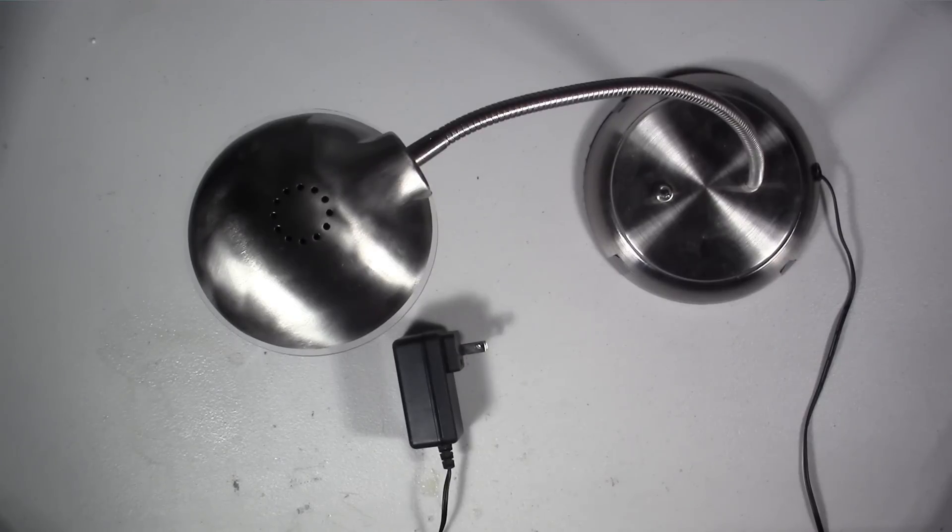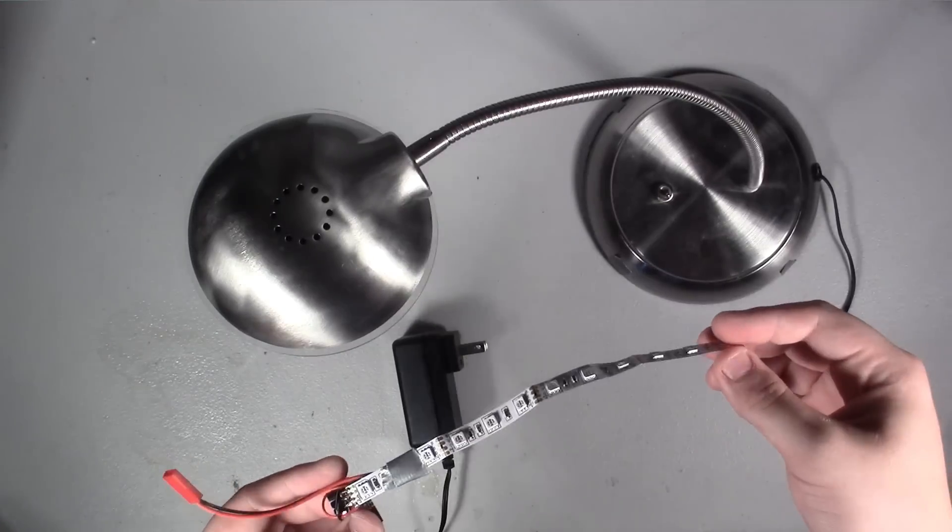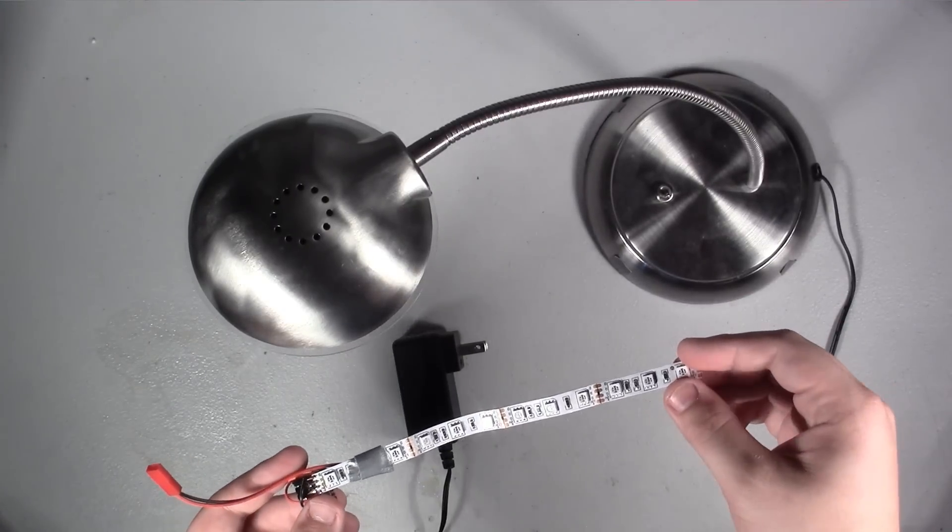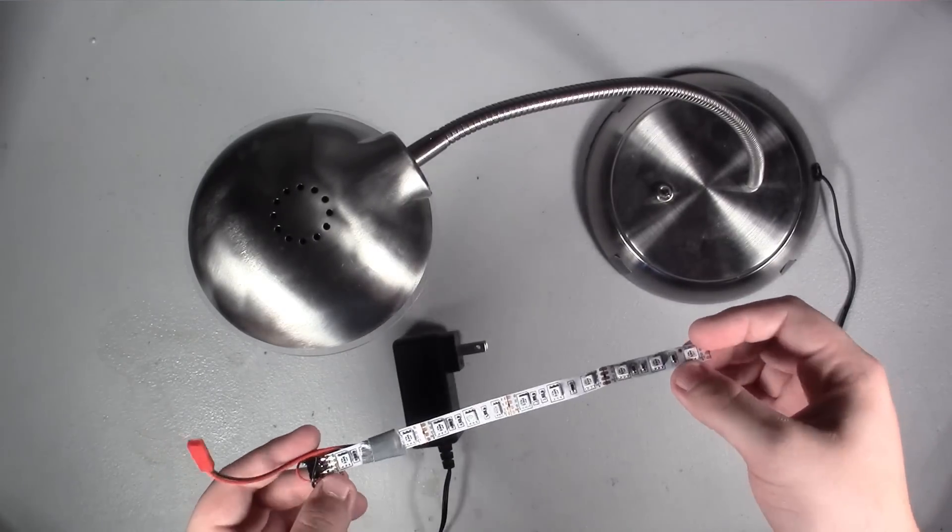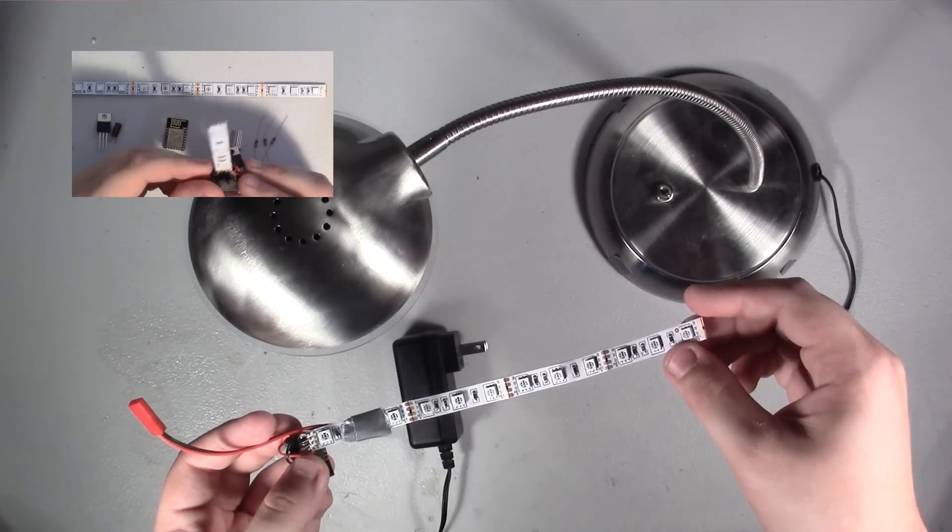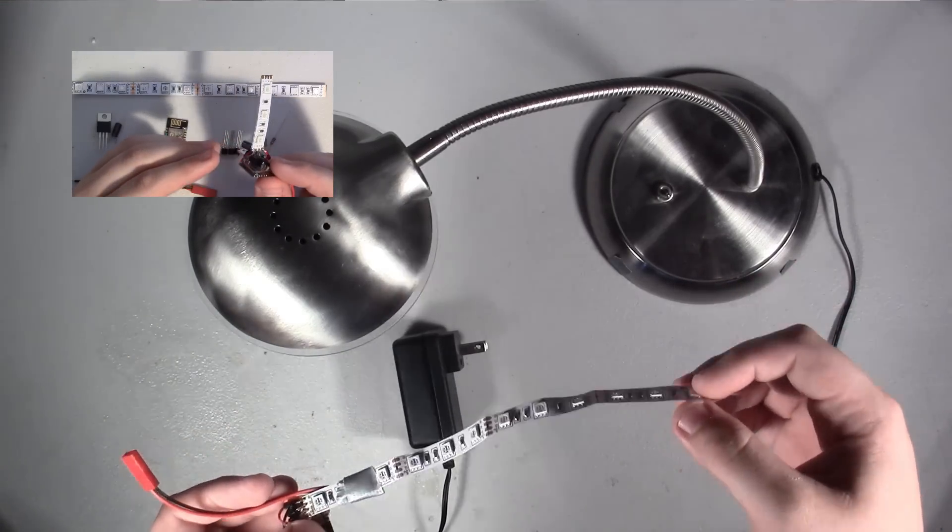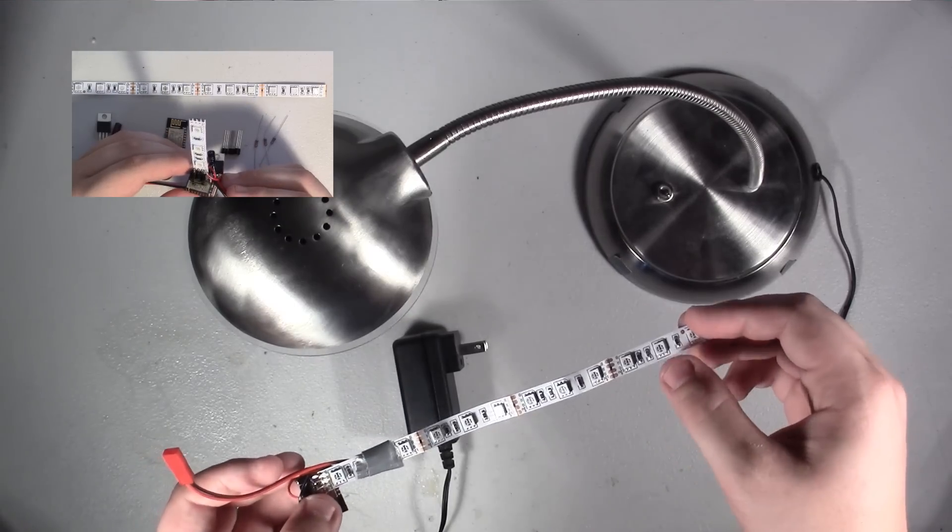A couple days ago I released the second part of the ESP8266 Siri controlled mood light videos. In the first part, I showed you how to build the raw electronics of that mood light, which looked more like this. But in the second part, where I show you how to integrate this with Siri, I had this guy built.